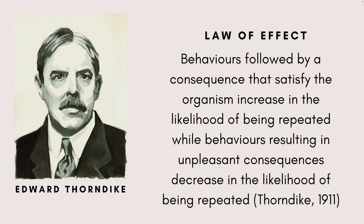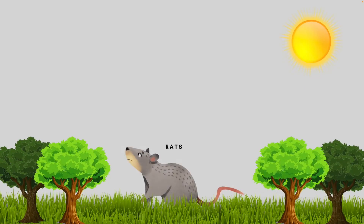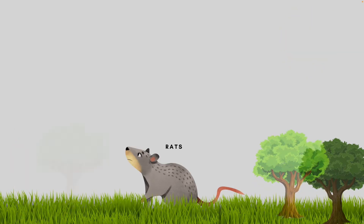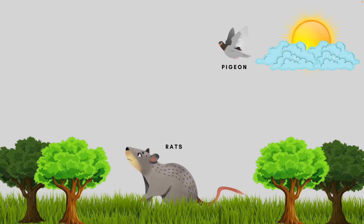Working with Thorndike's law of effect as his foundation, Skinner began conducting experiments with animals, more specifically rats and pigeons. His goal was to determine how organisms learned through his principles of operant conditioning, conducting many studies in the early 1940s. He placed these animals inside an operant conditioning chamber which he built specifically to test his hypotheses about operant conditioning theory. He called this the Skinner's box.